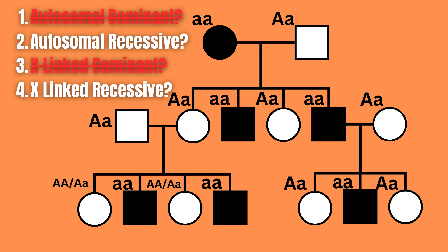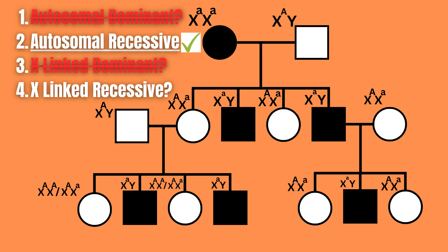We have now effectively proven that this pedigree can be autosomal recessive. However, if we were to assume that this was an X-linked recessive pedigree, everything will work out in a very similar manner as the autosomal recessive pedigree. What this means is that in this particular case, the trait in question can be both autosomal recessive and X-linked recessive. If you want to learn more about anything else on the topic of Mendelian genetics, check out this playlist.